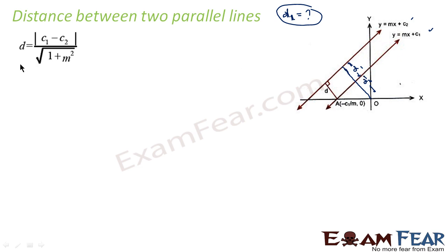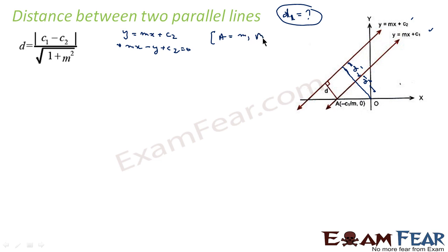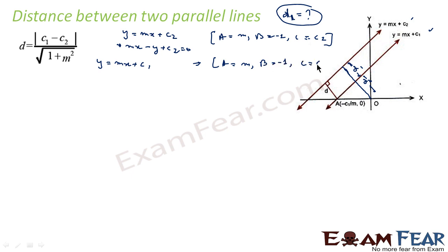Let's do this. We have two equations. For the first equation, y = mx + c2. We can write this as mx − y + c2 = 0. So here a = m, b = −1, and c = c2. This is equation 1. For line equation 2, y = mx + c1, following the same approach, we get a = m, b = −1, and c = c1.